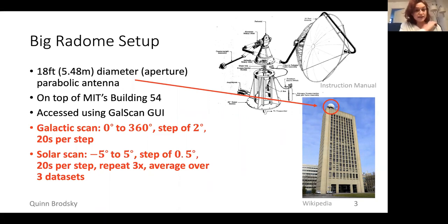For the galactic scan, we went from zero to 360 degrees in steps of two degrees, and at each point we spent 20 seconds taking data. For the solar grid scan, we went from minus five degrees to five degrees in steps of half a degree, and then we spent 20 seconds taking data there. We also repeated this scan three times and averaged over the data so we would have better statistics.